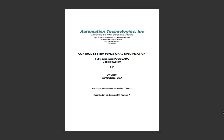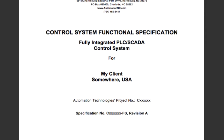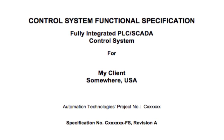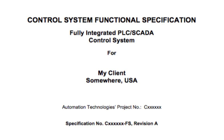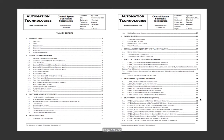What we have here is a typical functional specification document for our company, Automation Technologies. Let's talk about the structure first. This is just a title page, so obviously there's not a whole lot to see here, but it does explain what the document is about. Then you have some sign-off pages and then a table of contents, which gives us a chance to explain the organization of the document and what we expect to see in our documents.